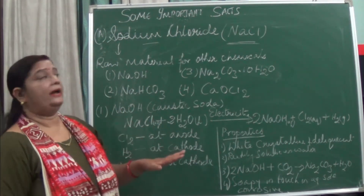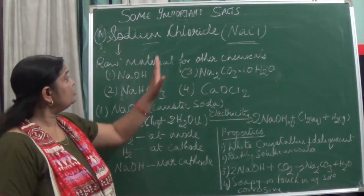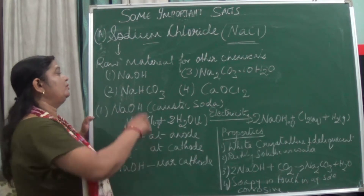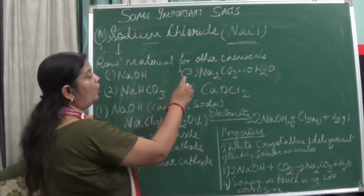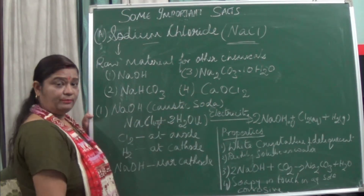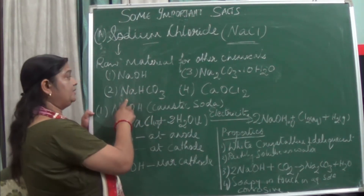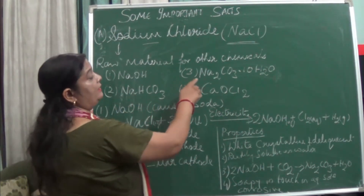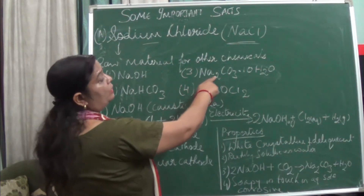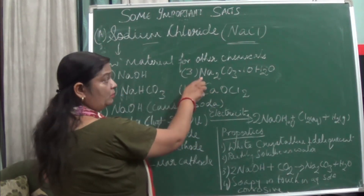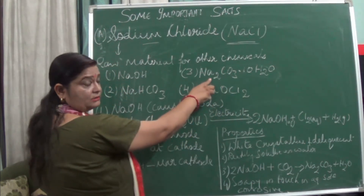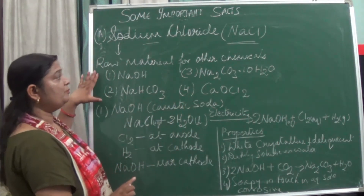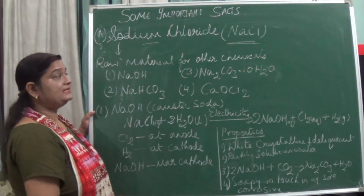Sodium chloride is an important chemical because it is a raw material for other chemicals. From NaCl we can prepare sodium hydroxide (NaOH), baking soda (NaHCO3), washing soda (Na2CO3·10H2O), and bleaching powder (CaOCl2).